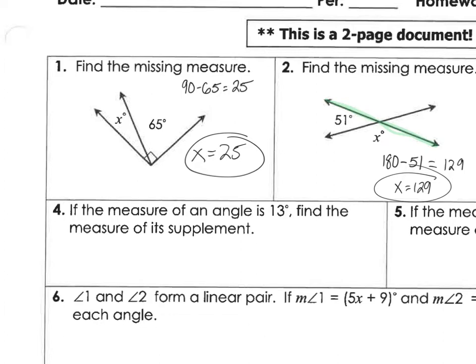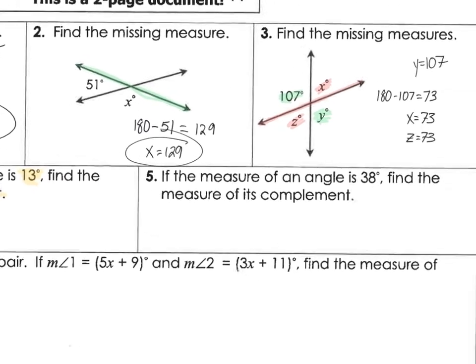It says the measure of an angle is 13 degrees. Find the measure of its supplement. Supplementary angles equal 180. So how would we find what the other angle would be? That gives us 167. You're doing it in your head — that's impressive.